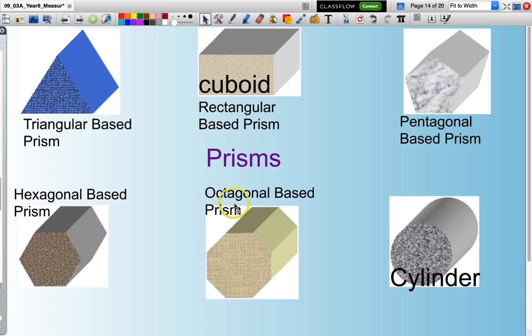Eight sides, octagonal based prism. This is a cylinder commonly referred to as a cylinder or if you prefer a circular based prism.